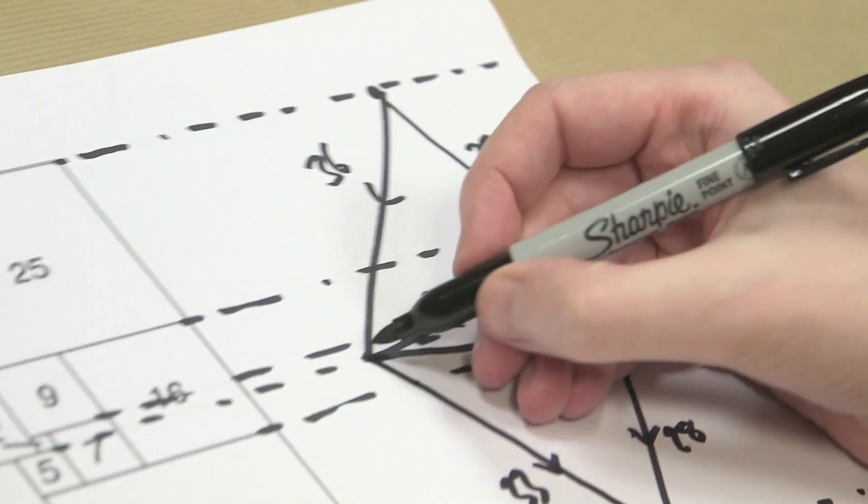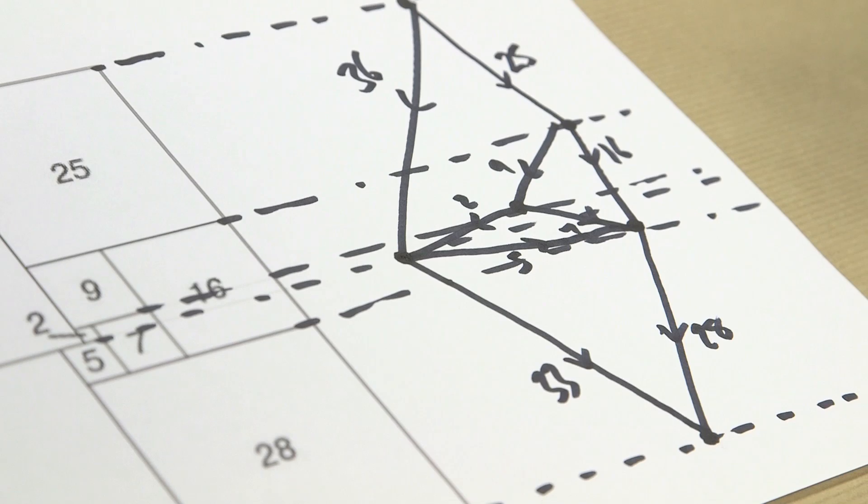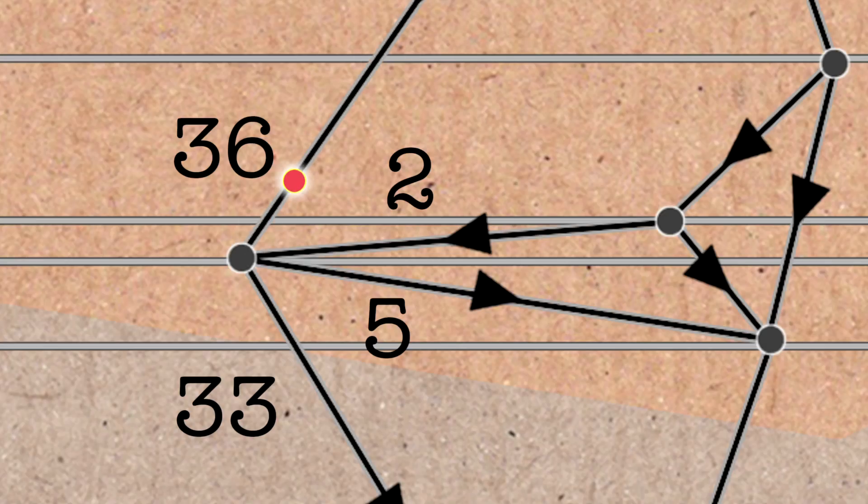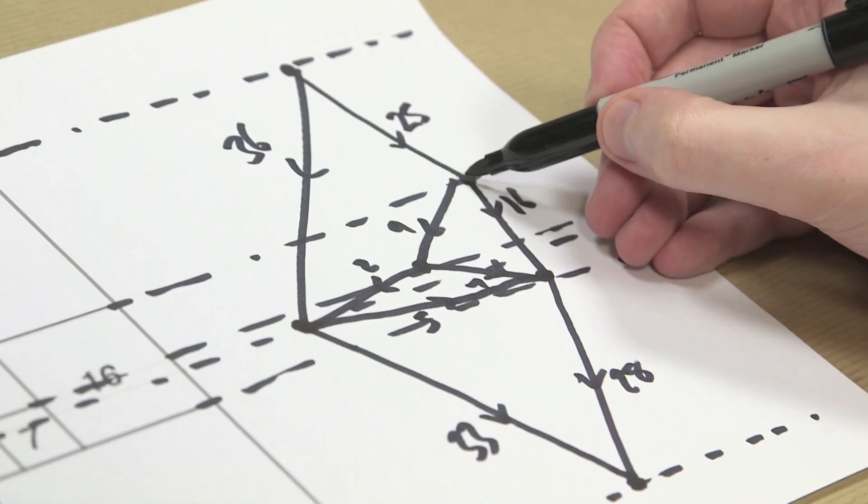In particular, these are called Kirchhoff laws. A couple of Kirchhoff laws are the current flowing into a point should equal the current flowing out of a point. So let's look at the current flowing into here. 36 is flowing in, 2 is flowing in, so we've got 38 in total flowing in. And flowing out, we've got 33 and a 5, so they are equal.